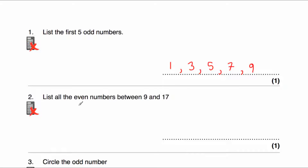Question number two says: list all the even numbers between 9 and 17. So 9 and 17 are both odd and we want all the even numbers in between. The next number after 9 is 10 — that's even. Then 11 is odd, 12 is even, 13 is odd, 14 is even, 15 is odd, 16 is even. Then we've got 17, so our even numbers between 9 and 17 are 10, 12, 14, and 16. Remember, an even number ends with a 0, 2, 4, 6, or 8.